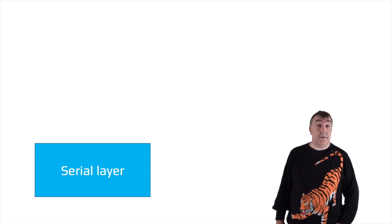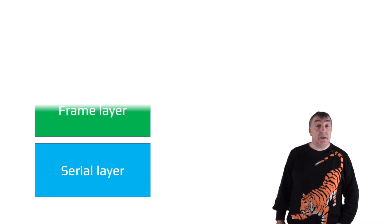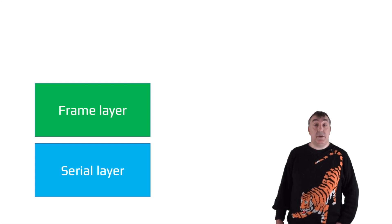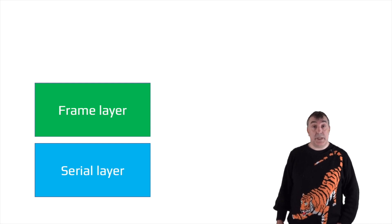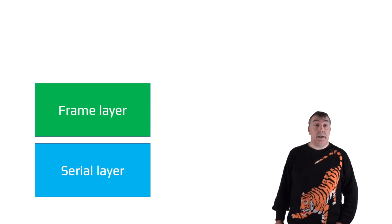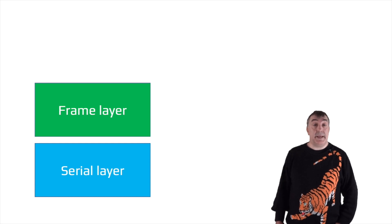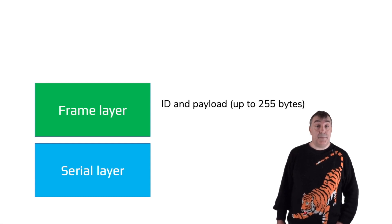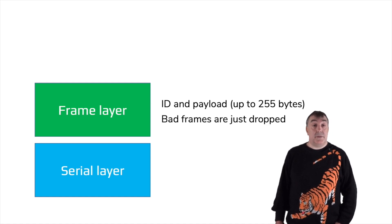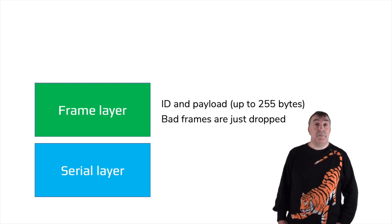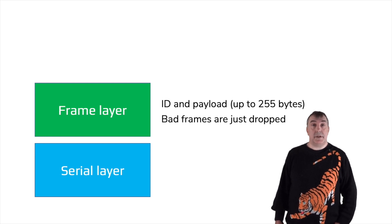MIN is a layered protocol. At the bottom is the serial layer, which is like a pipe for bytes. Above that, the frame layer defines how messages look on the wire. MIN uses byte stuffing to mark out the beginning of a frame and synchronize both the embedded and host ends. It also has an ID the application uses to mark out what's in the frame, carries a payload of up to 255 bytes, and includes a 32-bit CRC to guard against errors. The frame layer throws away bad frames.